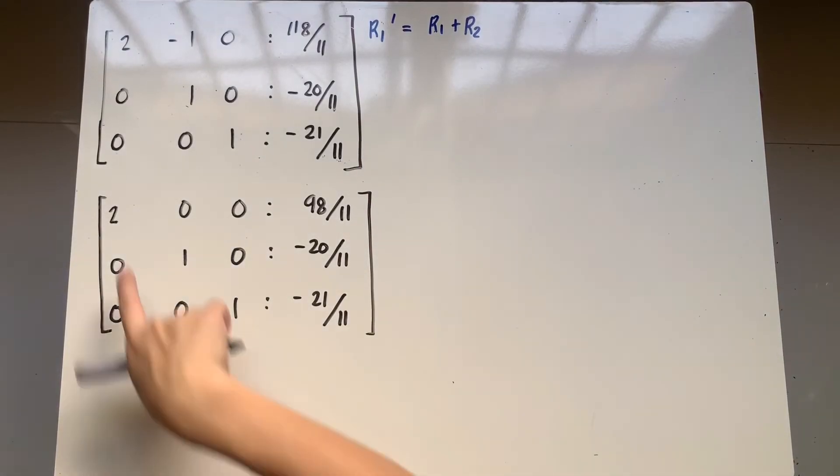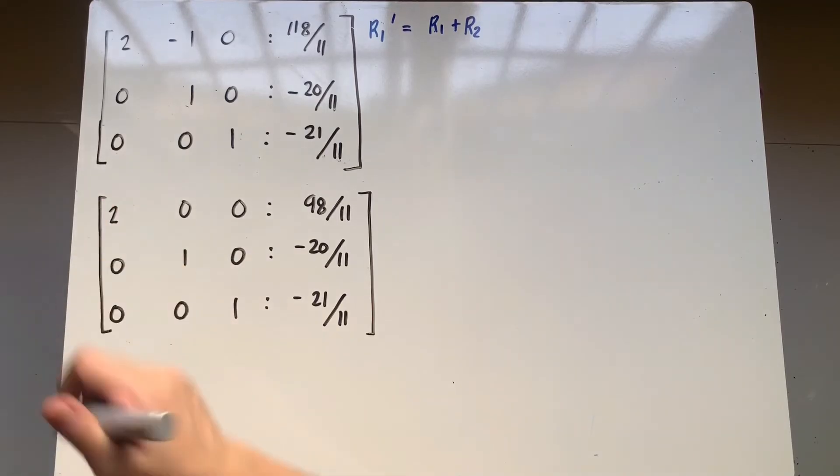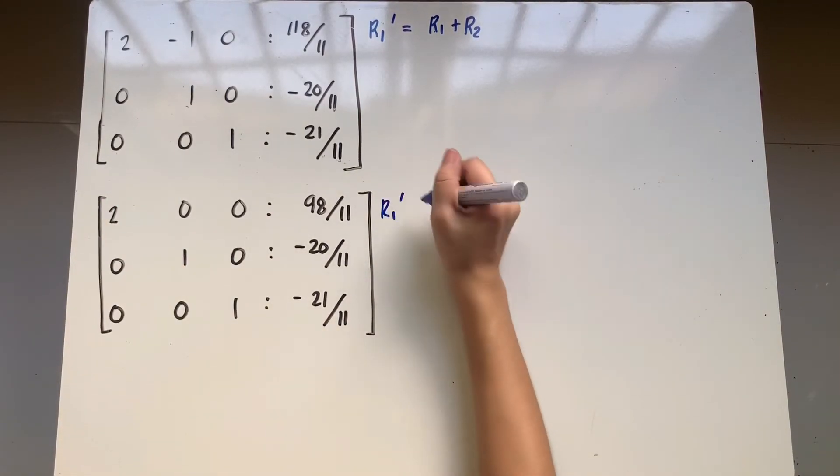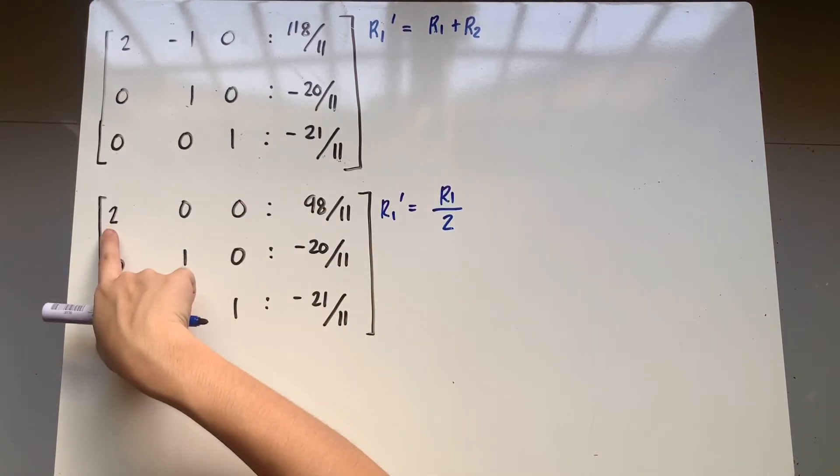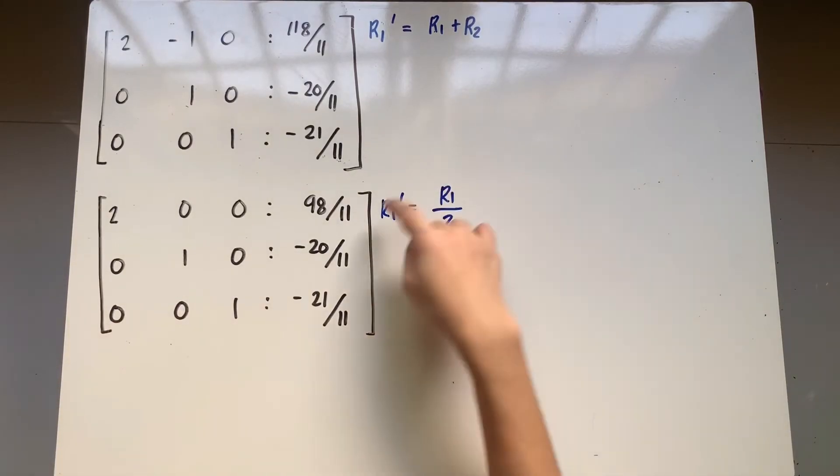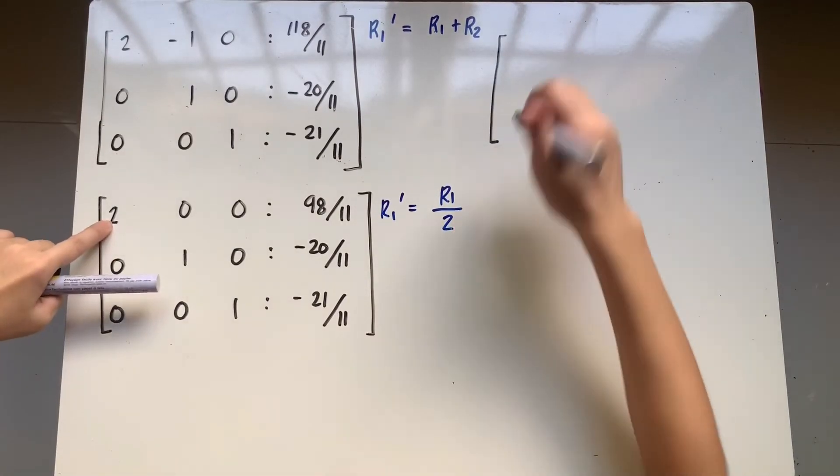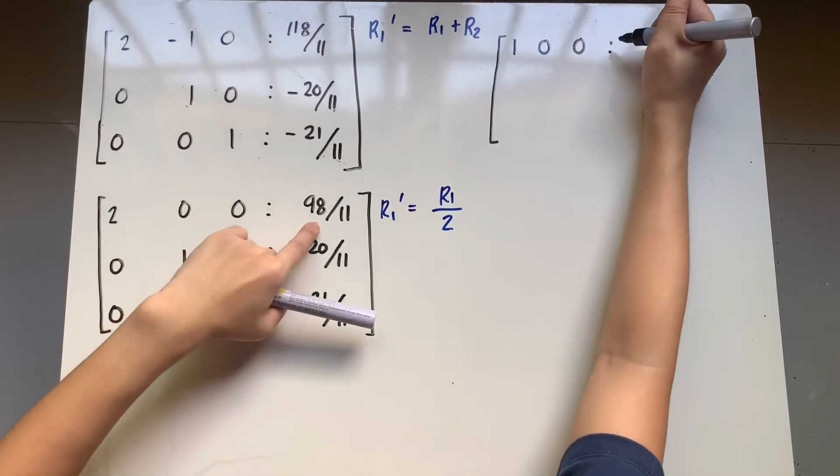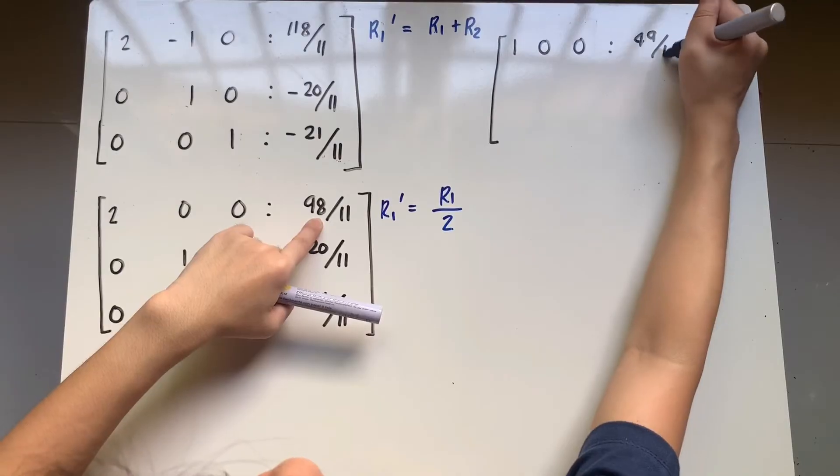After that, I will have this leading coefficient to be equivalent to 1. So, para ma-transform ko yan, I will again have a new R1. And that is simply R1, the first row, divide by 2 just so we can transform this to 1. So, I'll apply this to the whole row. And that will lead to 2 divide 2 which is 1. 0 divide 2 is 0. 0 divide 2 is 0. 98 over 11 divide 2 is 49 over 11.